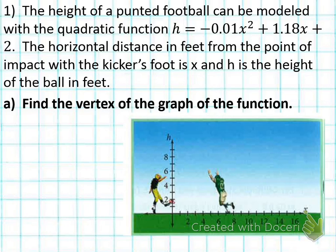The height of a punted football can be modeled with a quadratic function h equals negative 0.01x squared plus 1.18x plus 2. The horizontal distance in feet from the point of impact with the kicker's foot is x and h is the height of the ball in feet. Find the vertex of the graph of the function. The vertex, how do we find the vertex? Negative B over 2A.